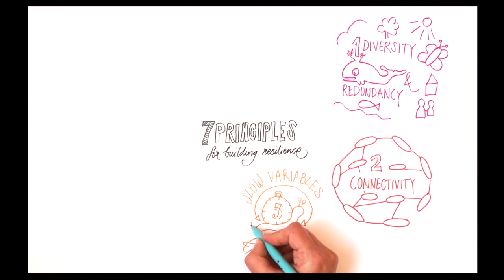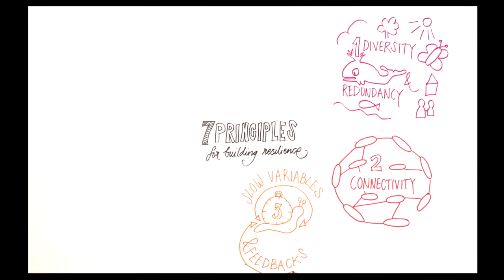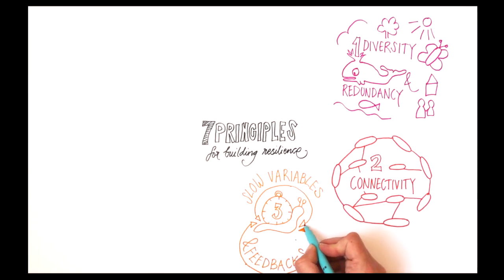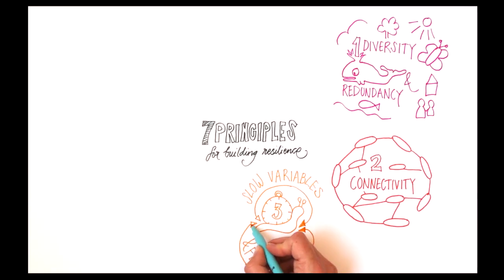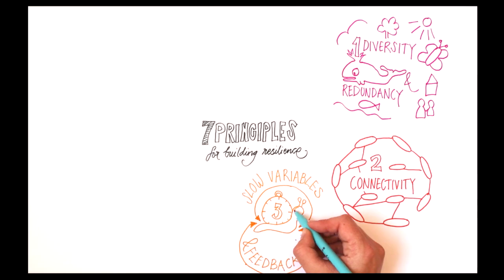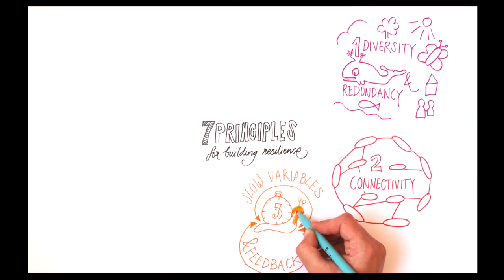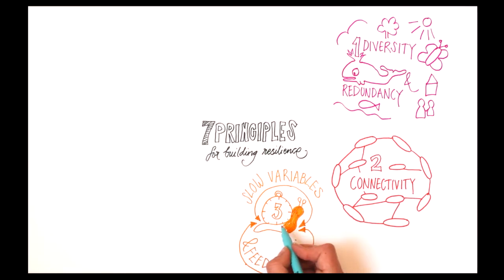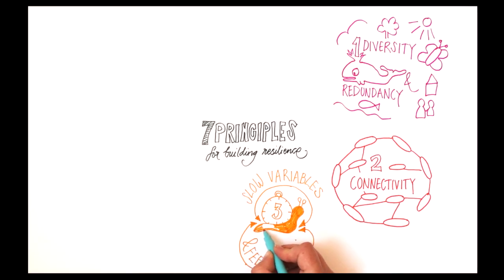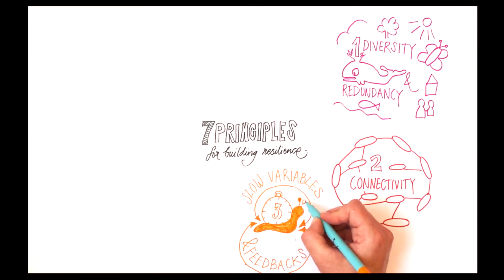Feedbacks can either reinforce or dampen change. An example of a positive feedback loop are grass fires, which promote further growth of the grasses and curb the growth of native shrub species. An example of a dampening feedback is sanctioning or punishment that occurs when someone breaks a rule.